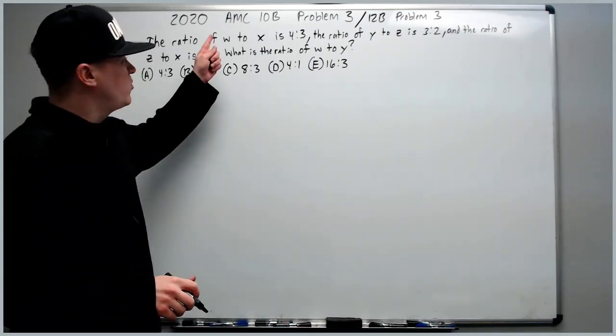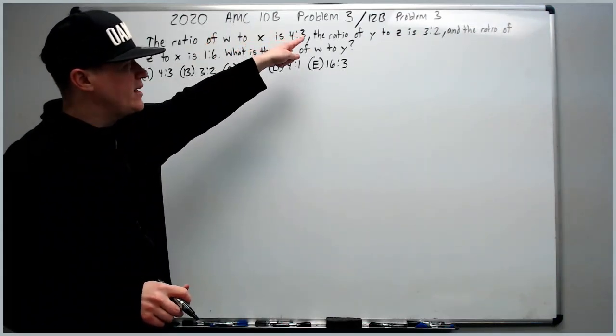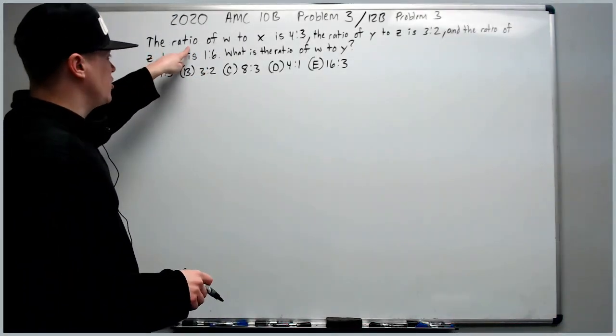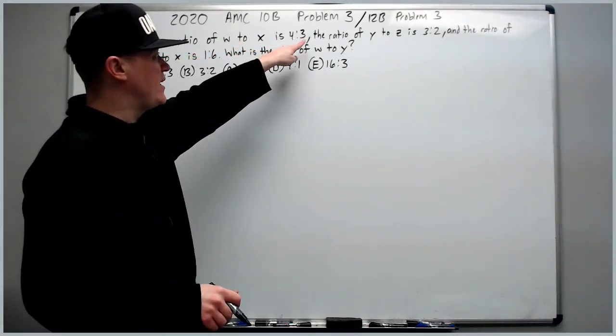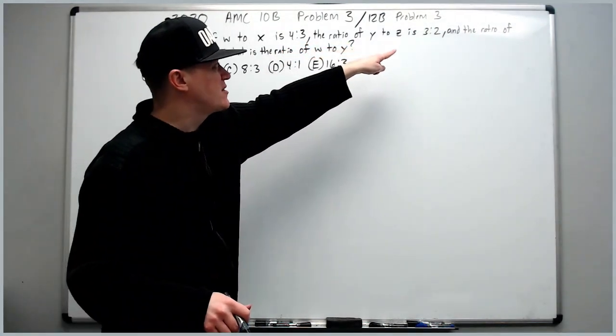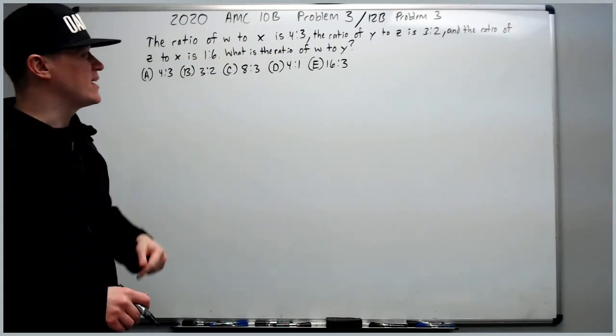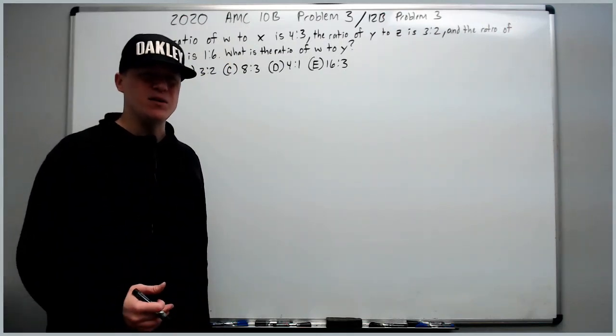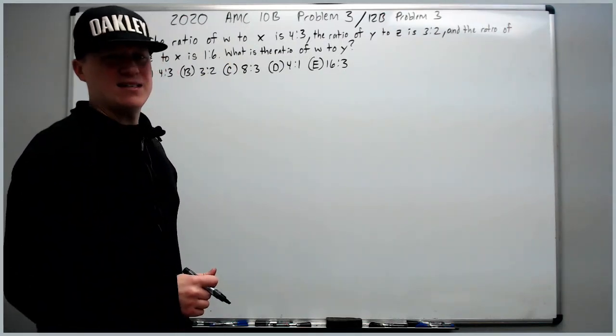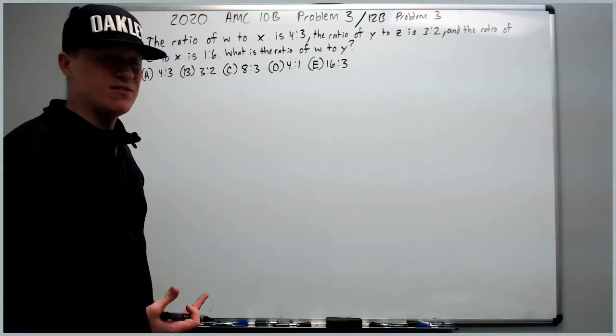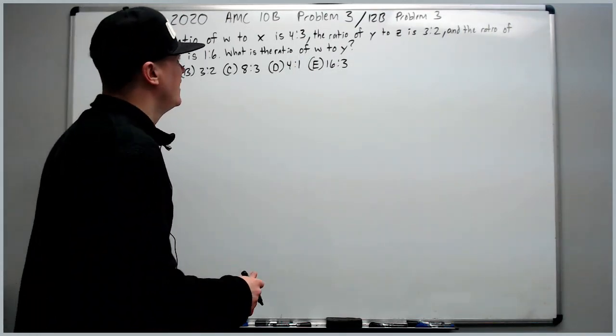Onto the 2020 10B problem 3, which was also the 12B problem 3. The ratio of W to X is 4 to 3. The ratio of Y to Z is 3 to 2. And the ratio of Z to X is 1 to 6. What is the ratio of W to Y? This is a tactic I picked up from volume 1 of AOPS. If you have access to it, it's pretty great.